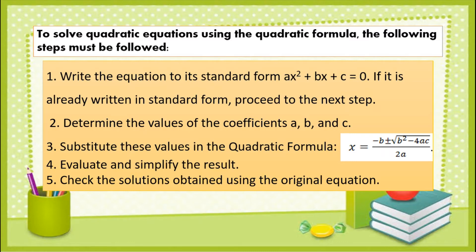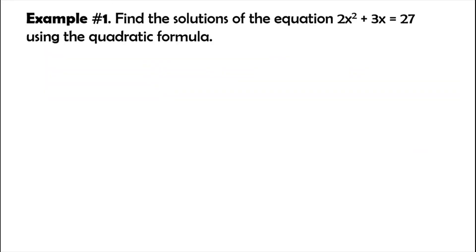Let's start with example number 1. Find the solutions of the quadratic equation 2x squared plus 3x equals 27 using the quadratic formula. For our solution, step 1: we have to transform the equation into its standard form — ax squared plus bx plus c equals 0.